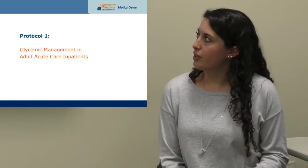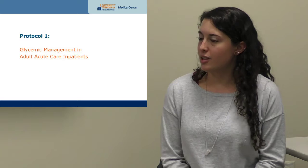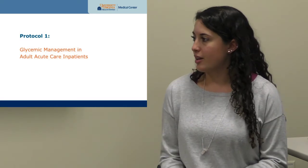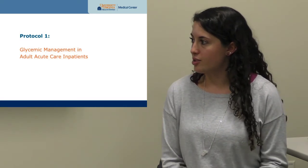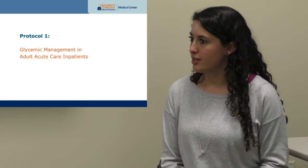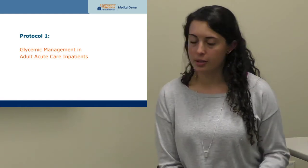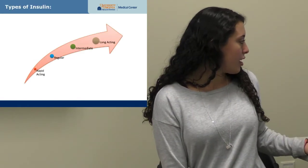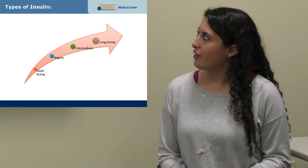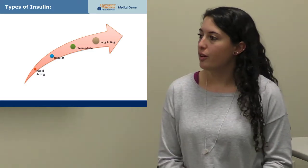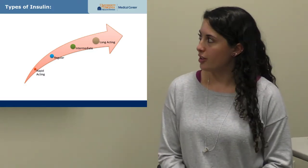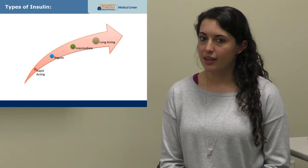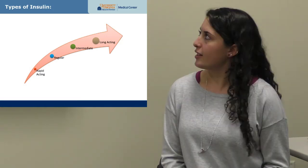We'll start with glycemic management in adult acute care patients — how we manage the general diabetic patient in the ED before they transition to the floor. We'll go over the four basic types of insulin: rapid-acting, regular, intermediate, and long-acting.